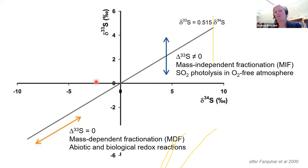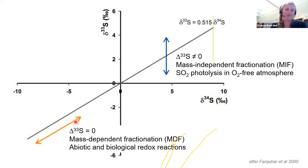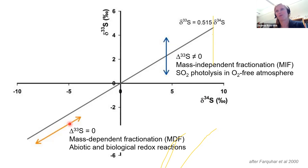The variations we just looked at represent mass-dependent fractionation of sulfur isotopes, meaning the change in the 33S/32S ratio — expressed as δ33S — is expected to be approximately half of the change in the 34S/32S ratio, due to the mass difference between isotopes. The expected relationship for abiotic and biological reactions is shown by a black line on this plot.